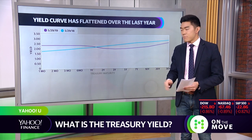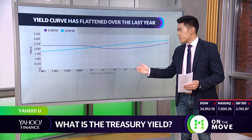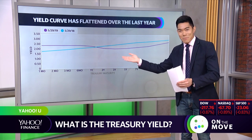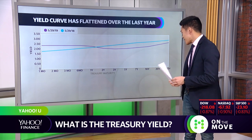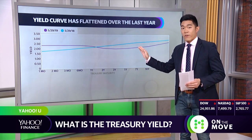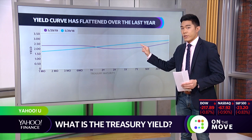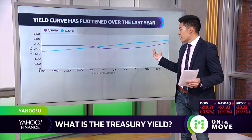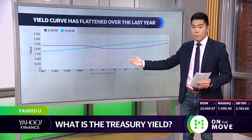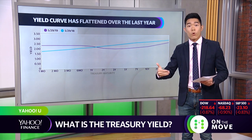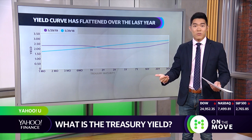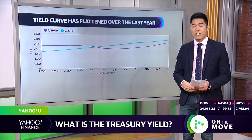The yield curve plots out different types of maturities across the board, starting at one month and going up to 30 years. Looking at the blue line — the yield curve as of a year ago — it makes sense: a 30-year Treasury yields more than a one-month Treasury. This shows that people are generally more optimistic about the future, because yields on these bonds reflect a consensus on what people think about the future.